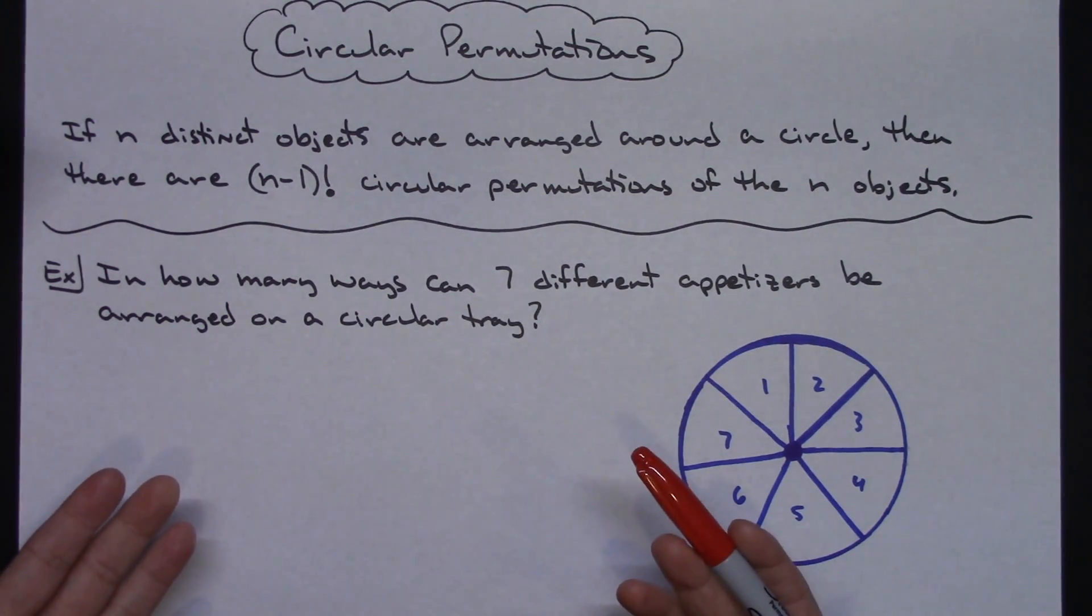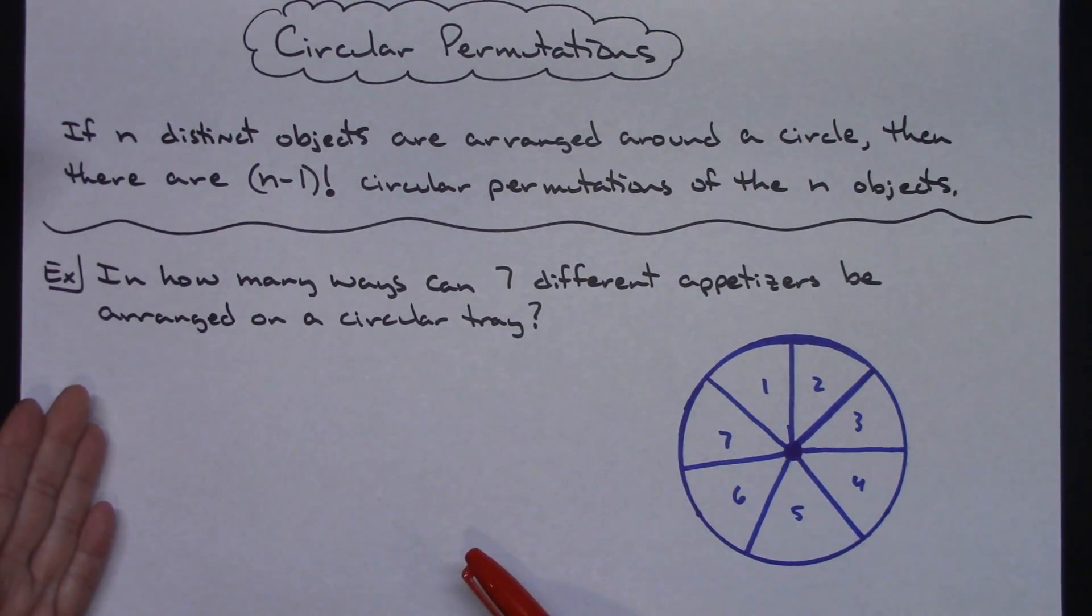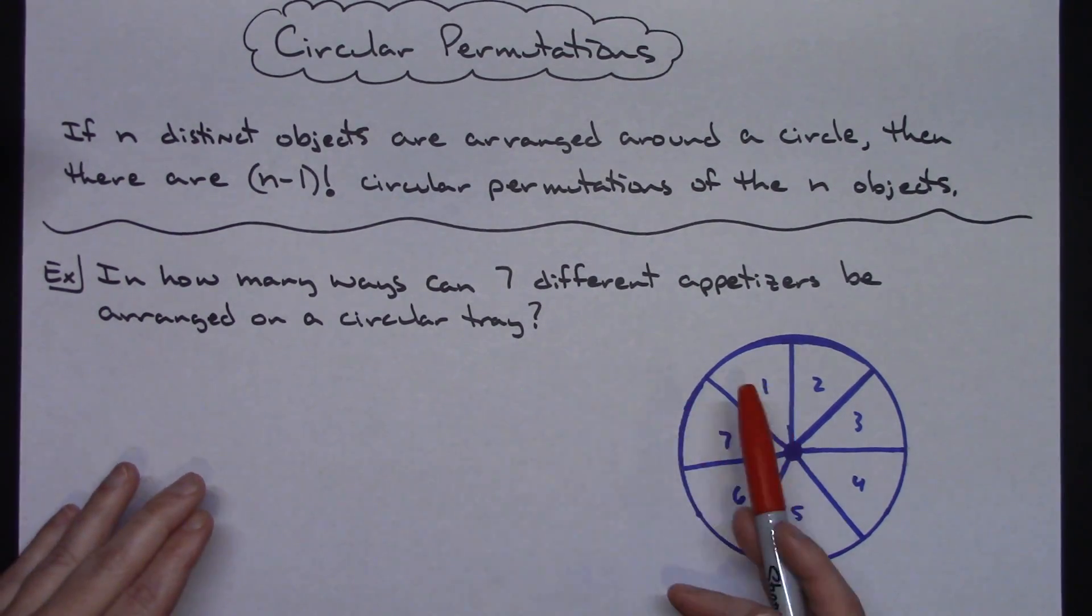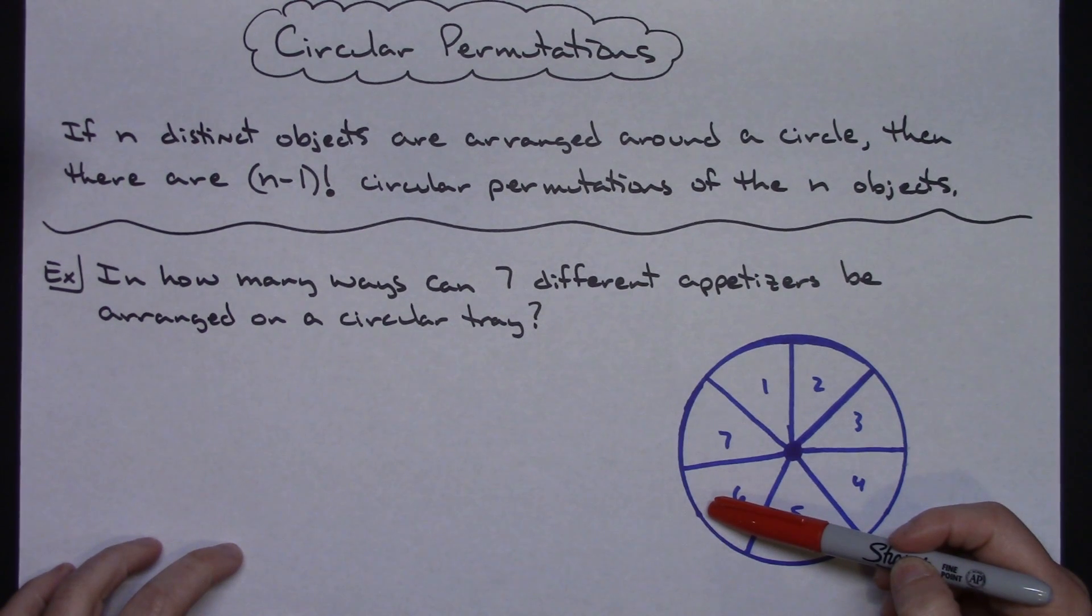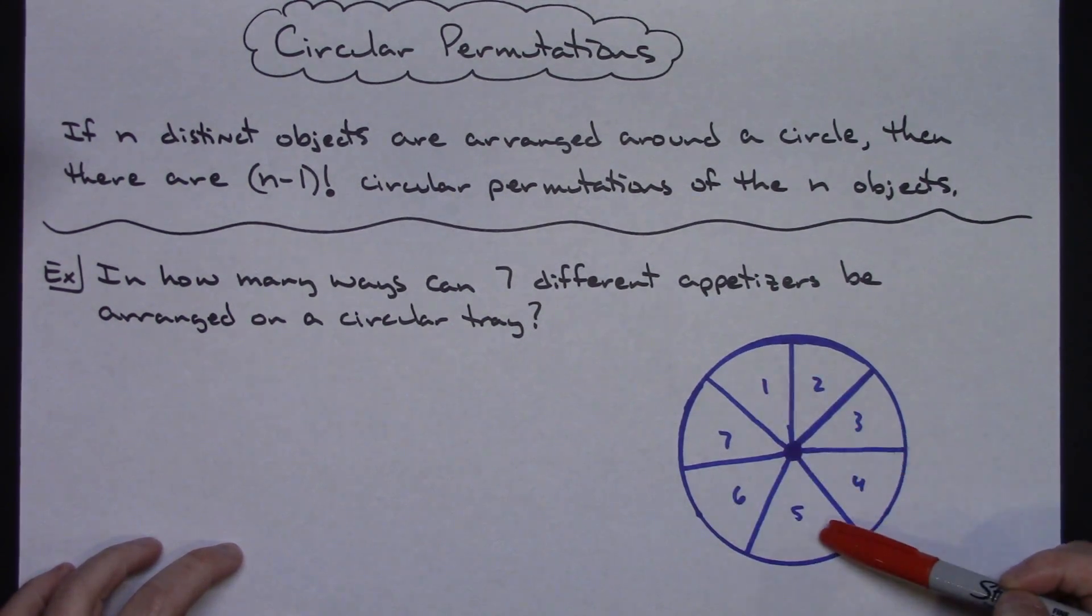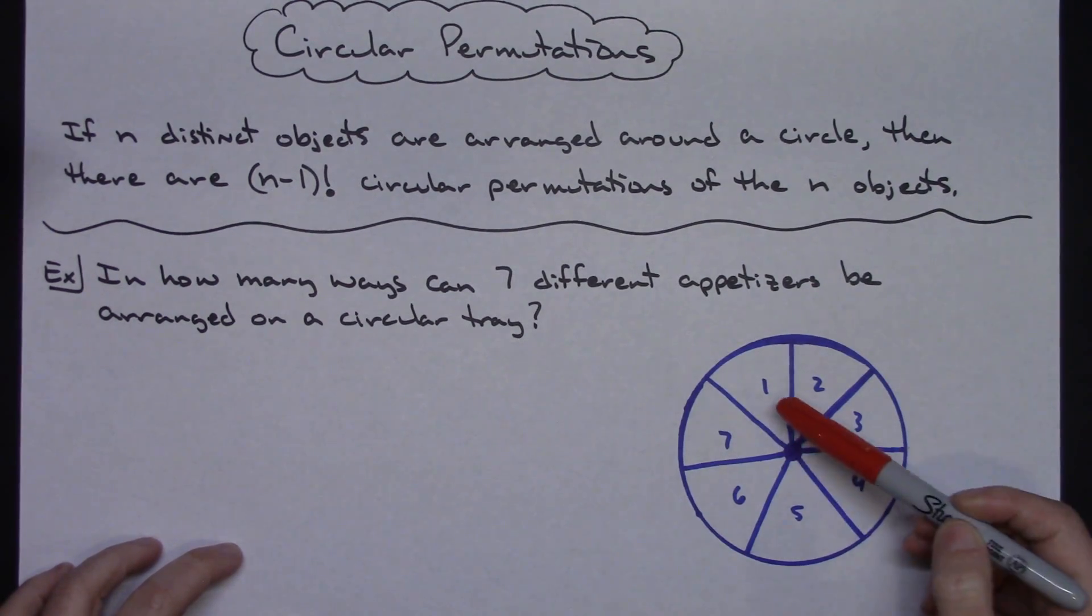So an example of when we might be using this: in how many different ways can seven different appetizers be arranged on a circular tray? You've got a circular tray, you've got seven different slots. How many different ways can I place seven different appetizers in those slots?